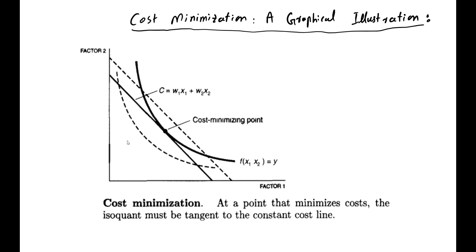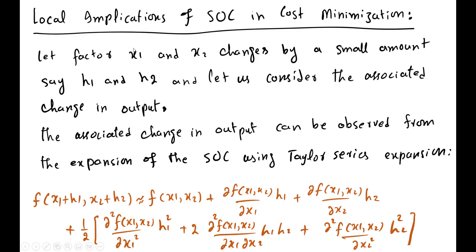Let us prove this. Suppose we are using two factor inputs x1 and x2, and we are violating the assumption that the slope of the isoquant equals the slope of the isocost, and the isoquant is not convex to the origin at the point of tangency. We are changing the two factor inputs x1 and x2 by h1 and h2 respectively, which means the optimal factor combination condition is violated. As a result, the cost will not remain minimum and output will not remain maximum.